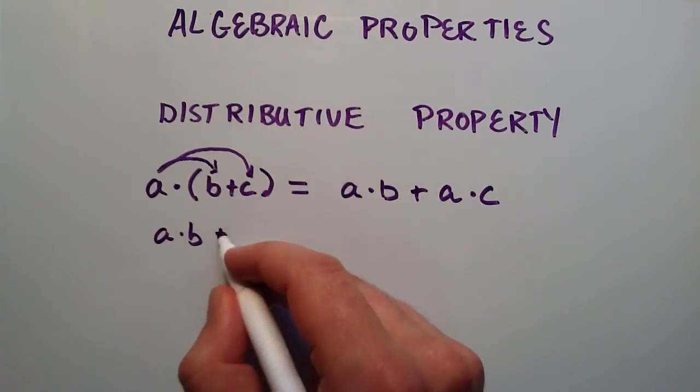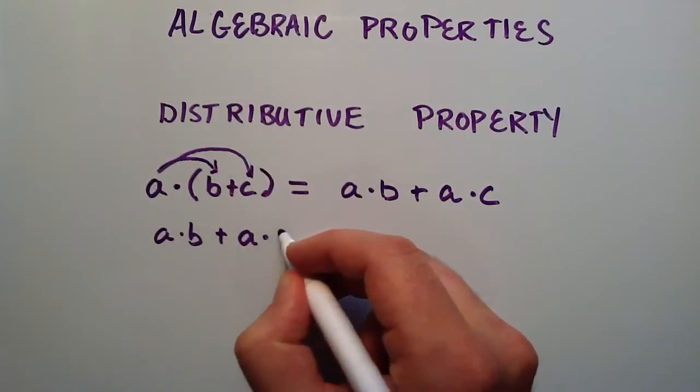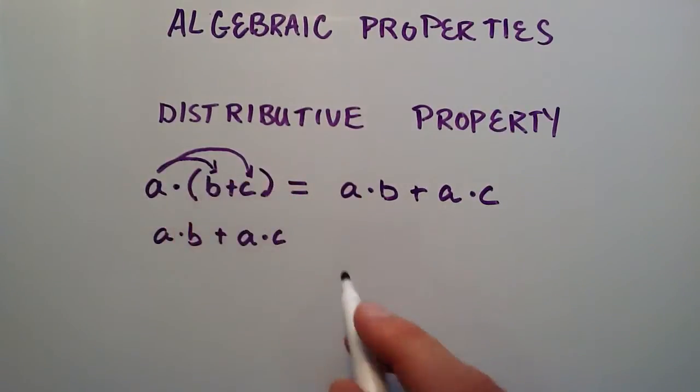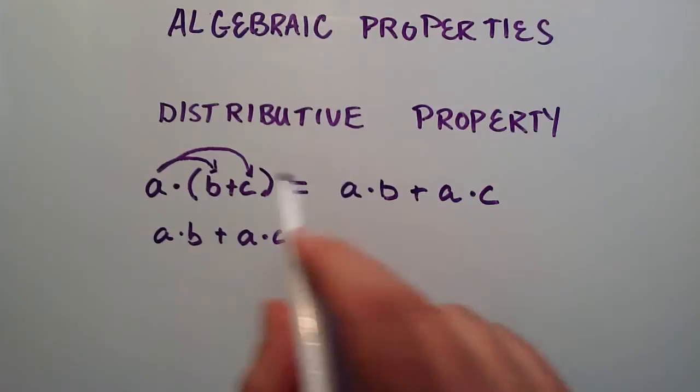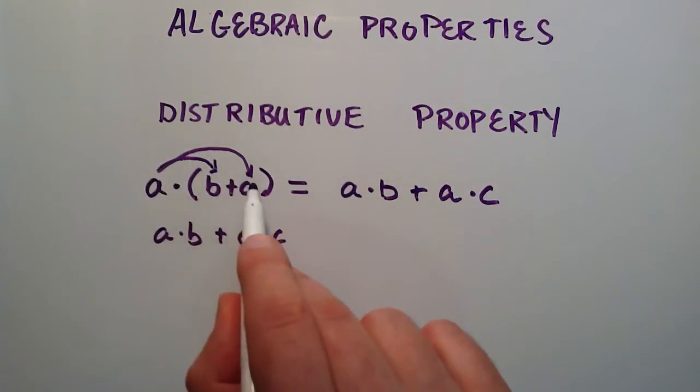So we put the plus sign here because it's in the middle, and then we do the a times the c, just like we did the a times the b. So that's how we get this result over here. We distribute the a times the b, and then add that to the a times the c.